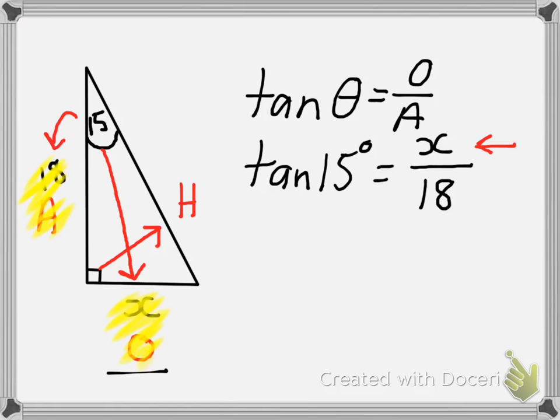Now, to do this, on our right-hand side here, we have an x divided by 18. So the opposite of dividing by 18 is to times by 18.